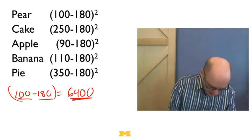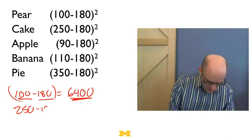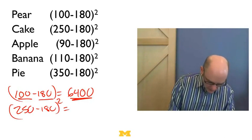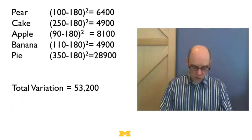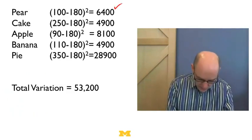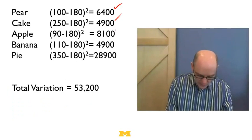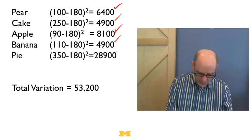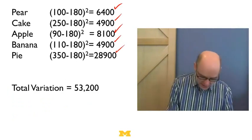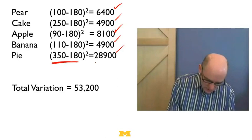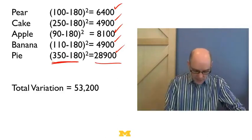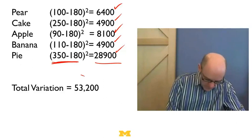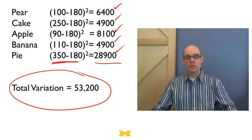So this is going to amplify large deviations. So if I look at the pear, I would have 100 minus 180, which is 80 squared, which is 6400. So if I did it for the cake, I'm going to get 250 minus 180, which is 70. And if I square that, I'm going to get 4900. Now I could do this for everything. For the pear, I get 6400. For the cake, I get 4900. For the apple, 8100. For the banana, 4900. For the pie, 28,900. So this is again, if you get a long way from the mean and you square it, you get a huge effect. So square amplifies larger mistakes. Now if I add up all these numbers, I'm going to get 53,200. That's what we call the total variation.